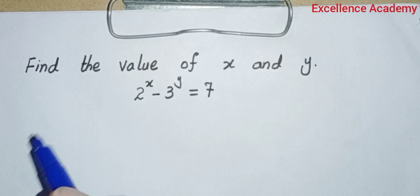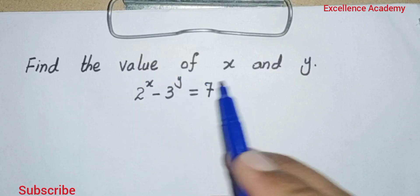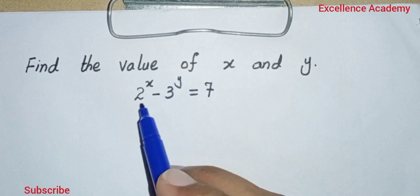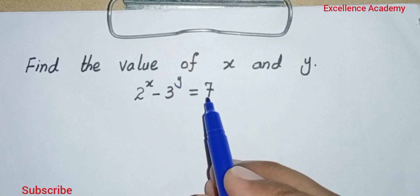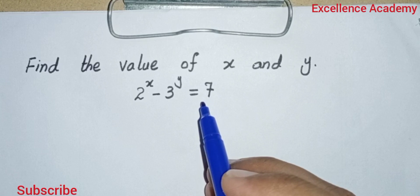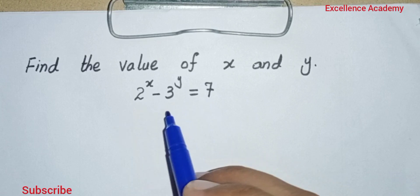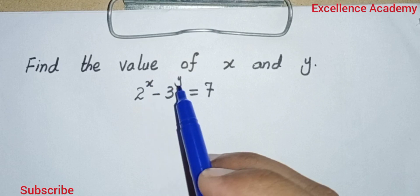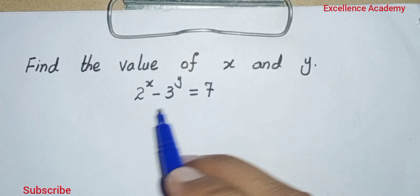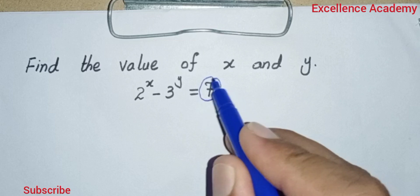Hello guys, today our topic is to find the value of x and y from the given equation 2^x minus 3^y equals 7. This question is taken from the Australian Math Olympiad and we have to find the value of x and y. To solve this question, let us focus on the term 7.